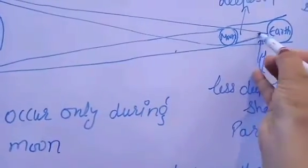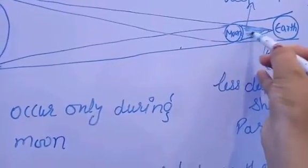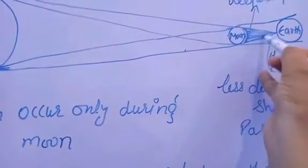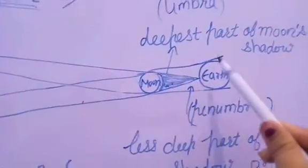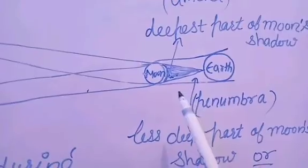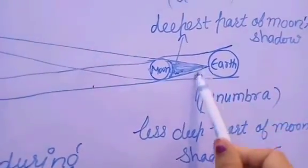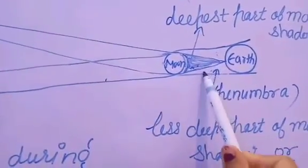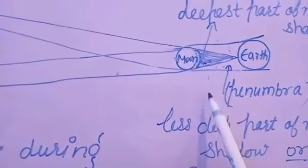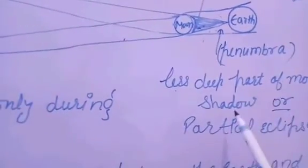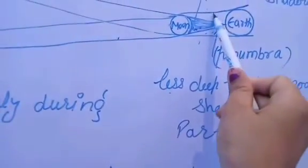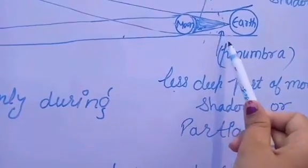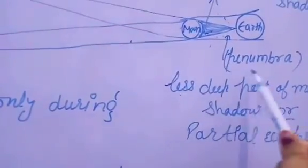This is the dark portion, deepest part of the moon's shadow. This is the deepest part of the moon's shadow, and the other name is umbra. And this is the less deep part of the moon shadow, and that part is known as partial eclipse or the penumbra. This is the less deep part known as penumbra.